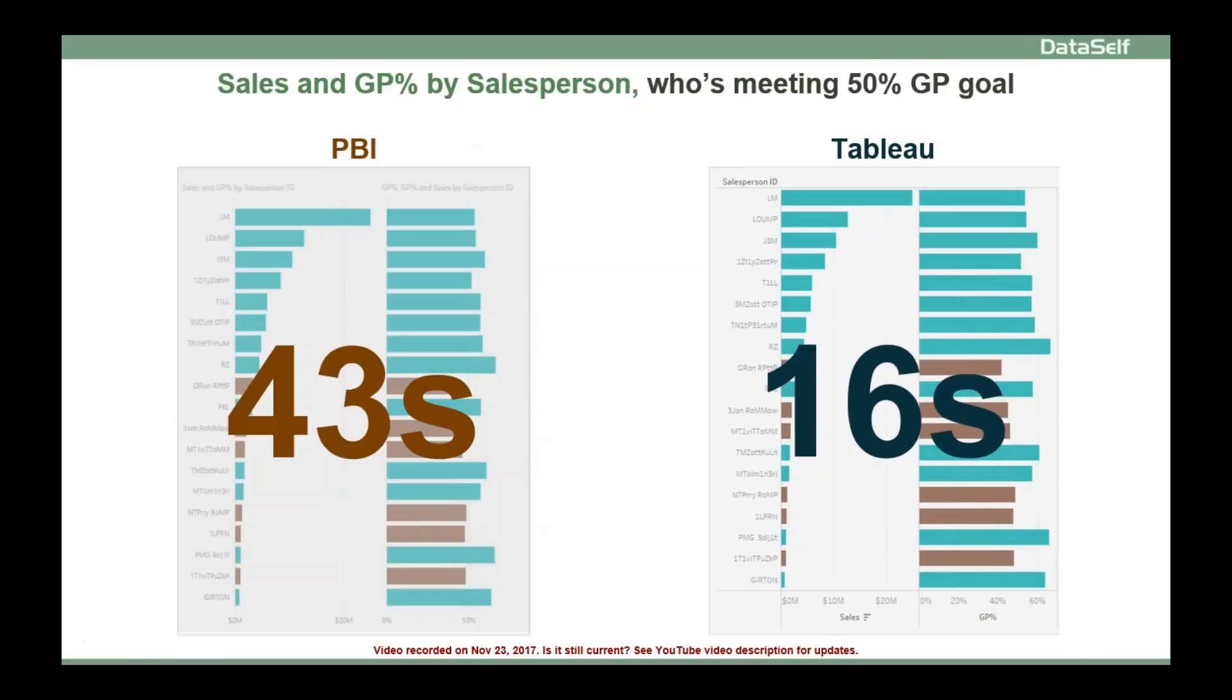So when we added who's meeting the 50% gross profit goal, then you can build from scratch in Tableau in 16 seconds, while in Power BI, you can do it in 43 seconds. So these benchmarks are what we just went through in our exercise.